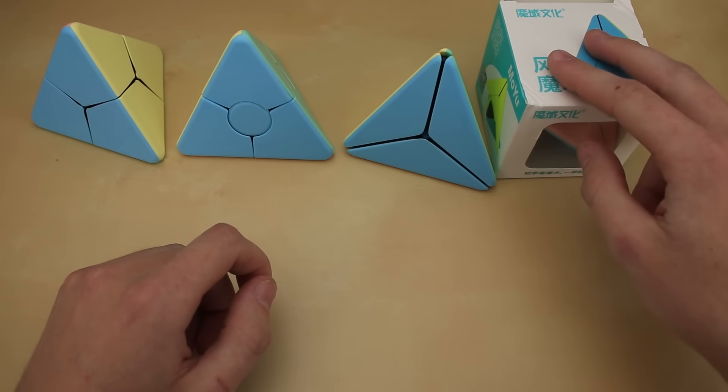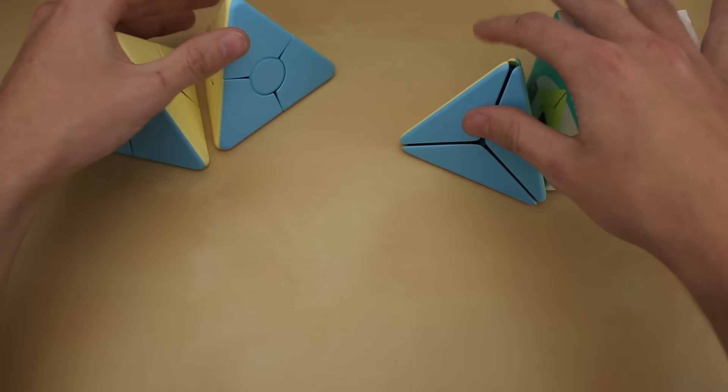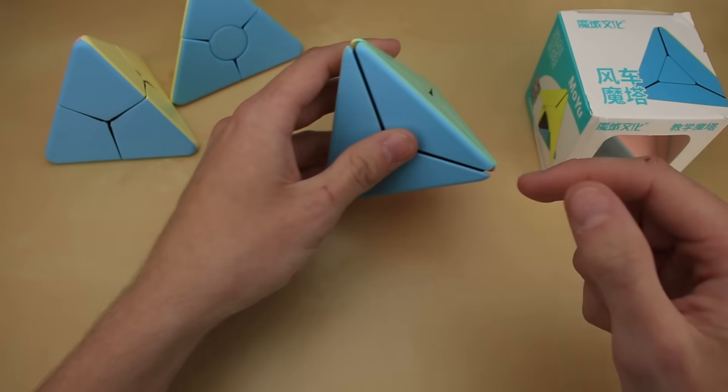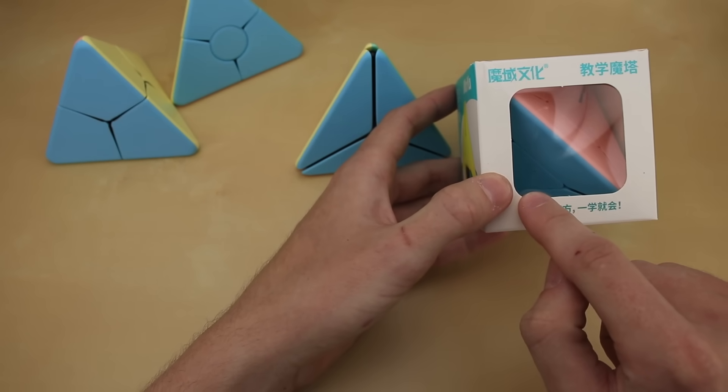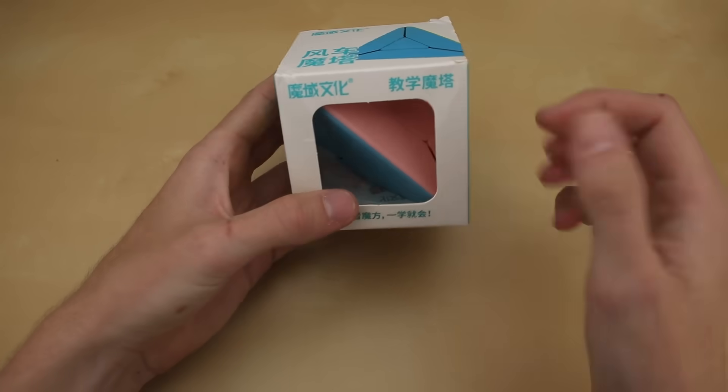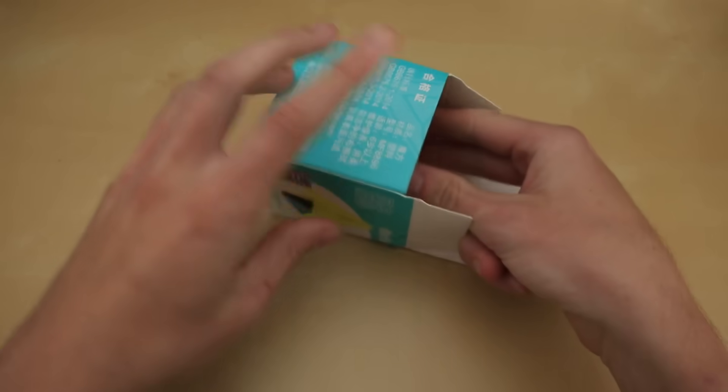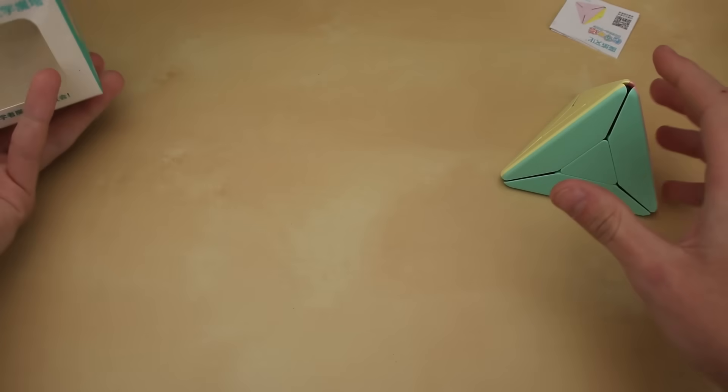Actually, if we look at the next puzzle on the list, we can kind of see that these go in pairs. We have something really simple, and then we add a piece in the middle. We have something a little bit harder, but still simple, and then we add a piece in the middle. So if that theory is correct, then this puzzle, the Windmill Pyraminx, should turn exactly the same as the last one, but with that added piece in the middle to make it a little bit more difficult.